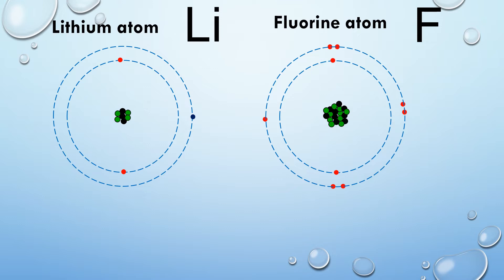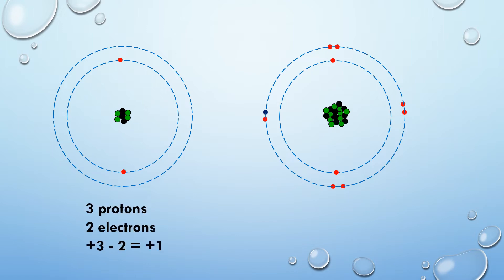So this lithium atom will donate its electron to the fluorine atom, and hence we get the fluorine and the lithium ion.